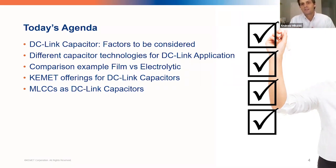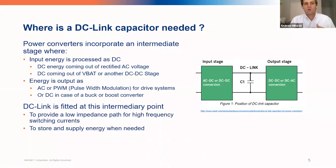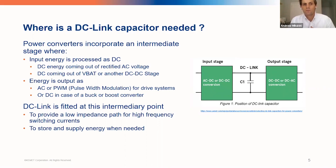First things first is understanding where a DC link capacitor is needed. The DC link is essential to any type of power conversion module. Essentially, it takes input energy as DC — that can be DC energy coming out of a rectified AC voltage, or direct DC from a battery, boost converter, or some other DC-DC conversion — and then it outputs it as AC or PWM pulse-width modulation for drive systems, or it could be the input as DC of a buck-boost converter.